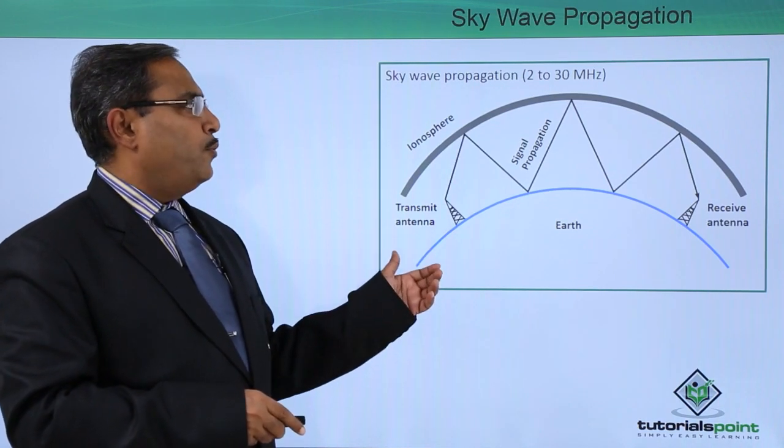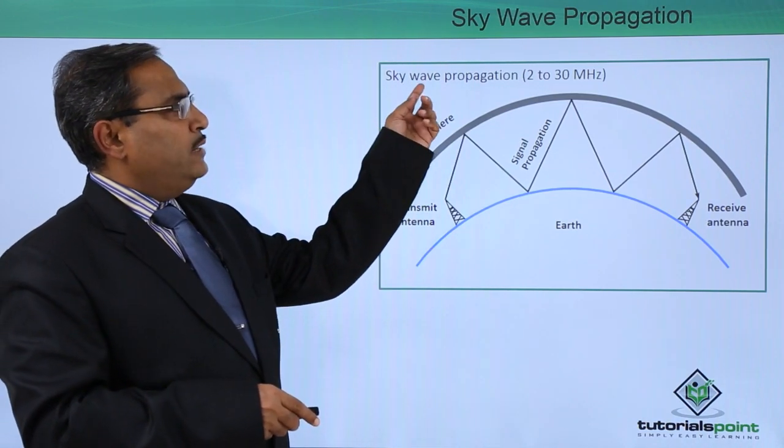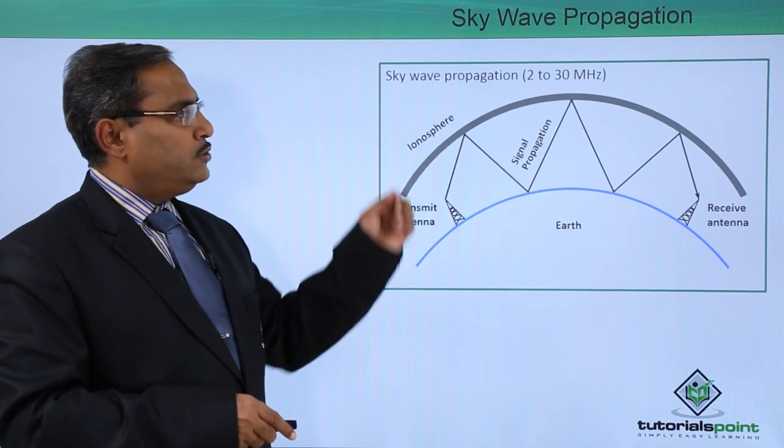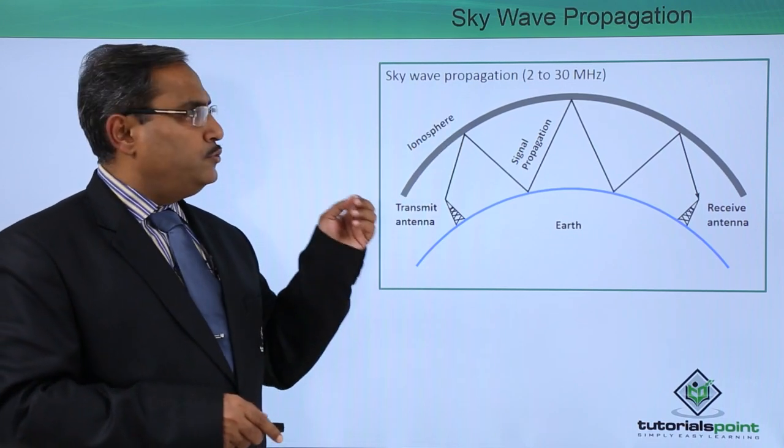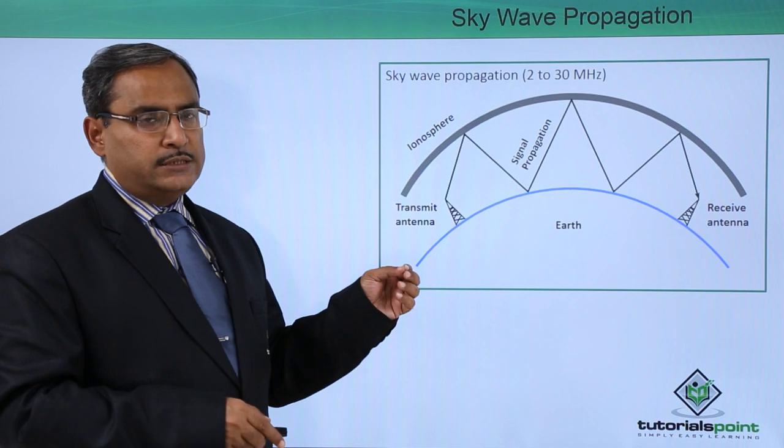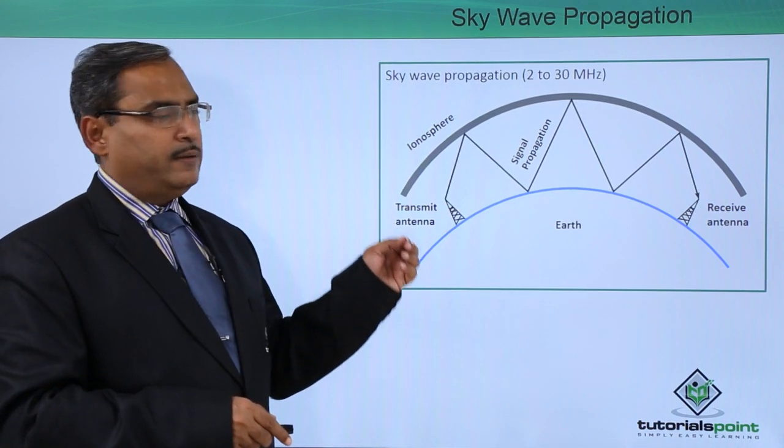Now, we are going for the sky wave propagation. There is a sky wave propagation with the frequency ranging from 2 to 30 megahertz.